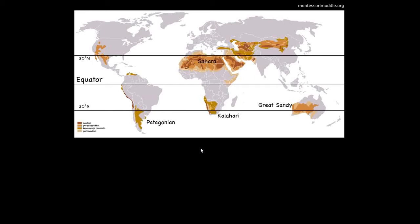Here we have a map of the major deserts on the surface of the Earth. Take a few seconds and see if you can find a pattern in the way they're distributed. You may have noticed that they seem to be clustered near certain latitudes — around 30 degrees south latitude and 30 degrees north latitude — without many deserts near the equator.